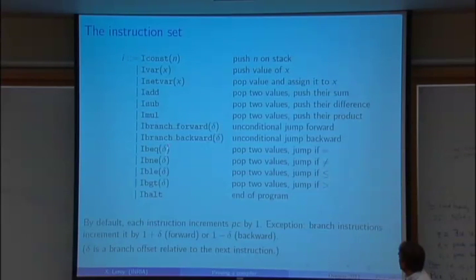And then we have some conditional branches. So they pop two values off the stack, compare them, and if the condition is true they jump forward by delta. And finally we have an instruction to say stop, the program is finished.